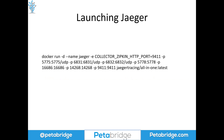To launch Jaeger we're going to use a built-in Docker container that the Jaeger project produces called the all-in-one container. This runs all three of the different pieces of infrastructure that Jaeger normally uses in production inside the same process, and it's really good for evaluating Jaeger quickly. So if you're an organization looking to try out distributed tracing for the first time, the Jaeger all-in-one setup is a really easy way to evaluate it.